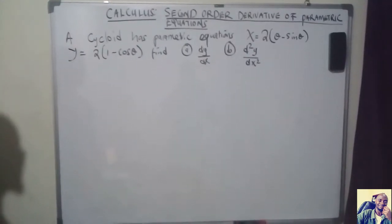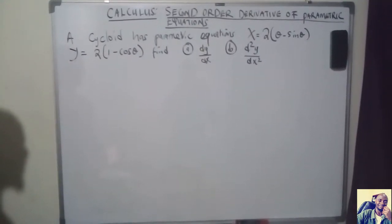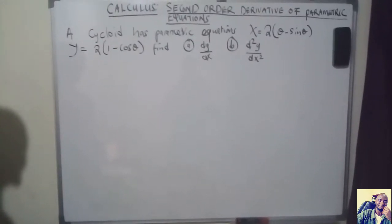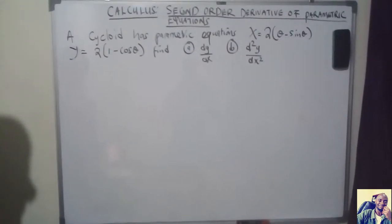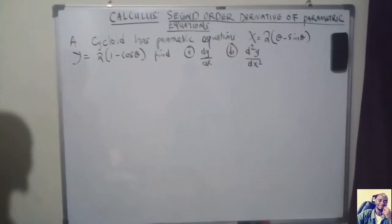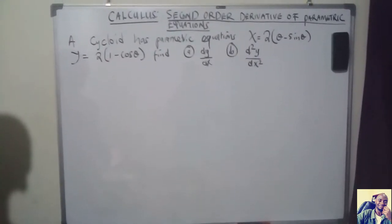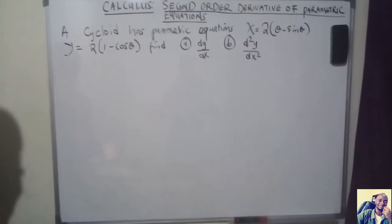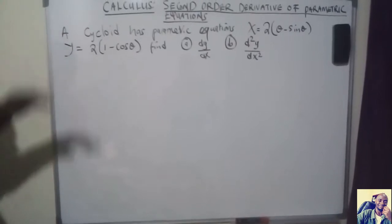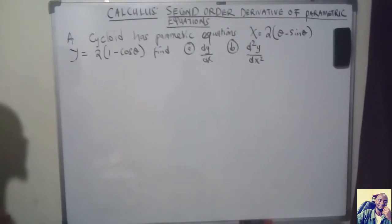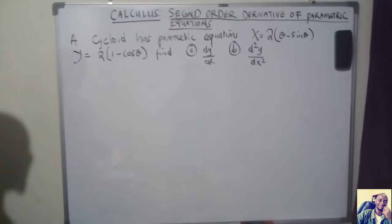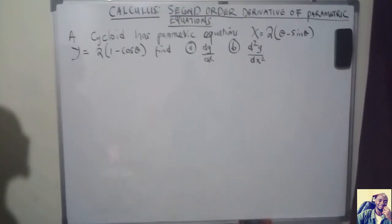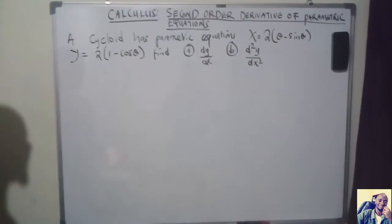In this video, we want to see how we can find the second-order derivative of parametric equations. Parametric equations are simple equations where we have two variables — for instance, x and y — which are expressed in terms of another variable, theta or t. When there are three variables, we have to use what we call parametric differentiation.